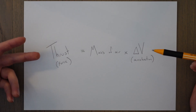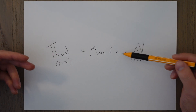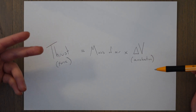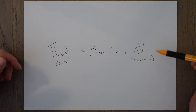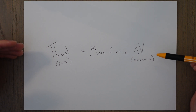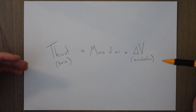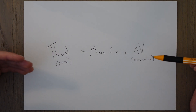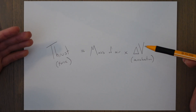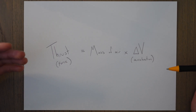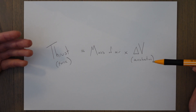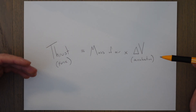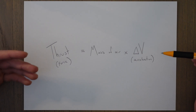The thrust equation looks like this: thrust, which is a force, equals the mass of the air times the difference in speed, which is the acceleration — F equals ma. The change in speed is the difference between the exhaust gas speed and the inlet speed to the engine. The inlet speed to the engine is the same as the aircraft's forward speed. This isn't the whole picture though — for the jet engine we must add on some more terms to this equation.